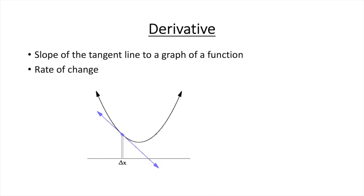For example, the derivative of the position of a moving object with respect to time is velocity, which measures how quickly the object's position changes with time.